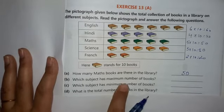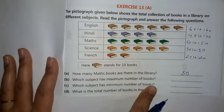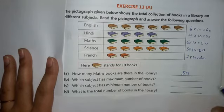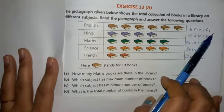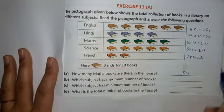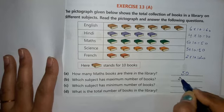Next is which subject has maximum number of books. So here you can see it is clear that English has the maximum number of books, which is sixty. So here your answer will be English.